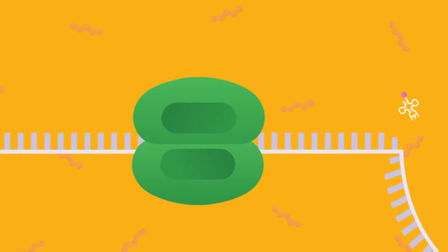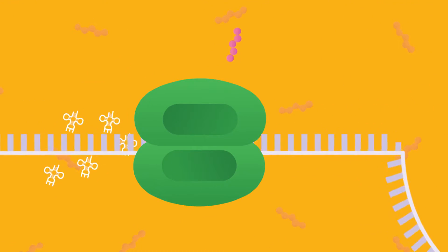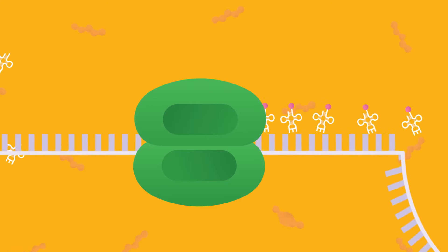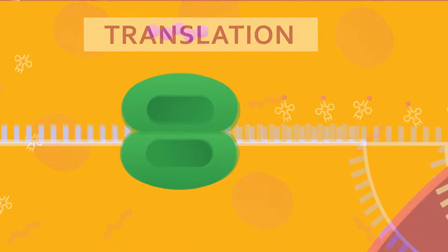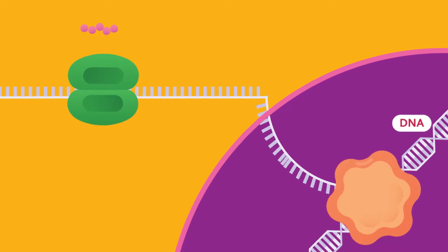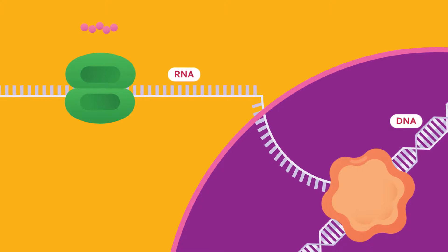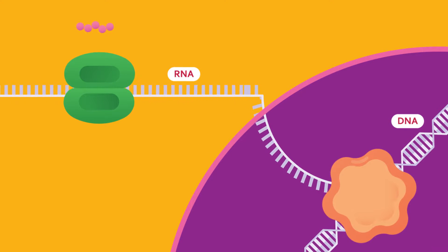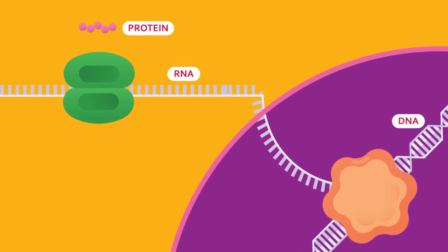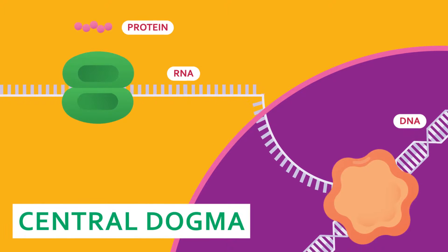It is further translated into proteins by a process termed as translation. The explanation of DNA conversion into RNA, and finally RNA into proteins, is called central dogma.